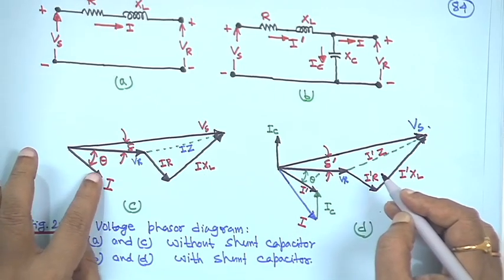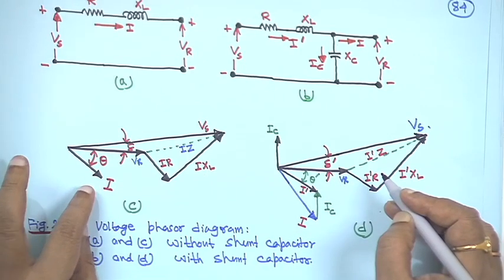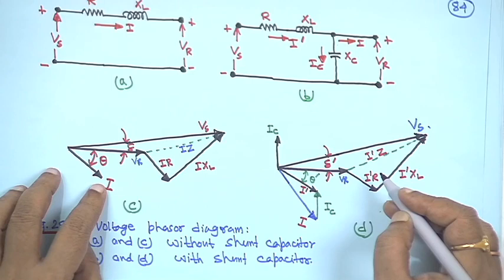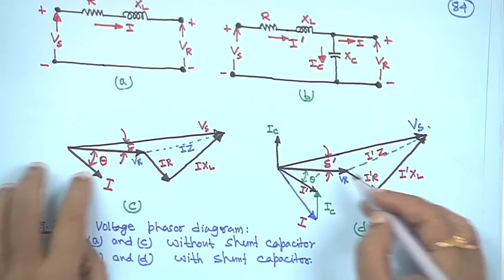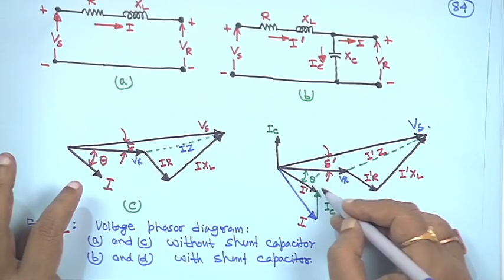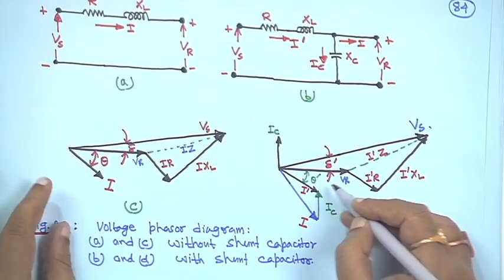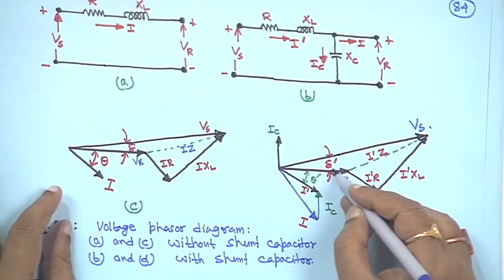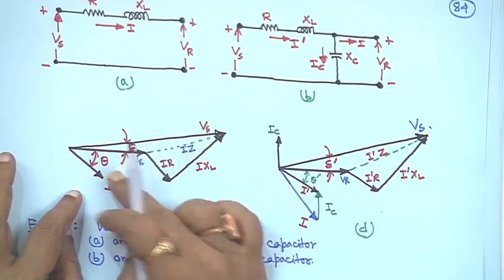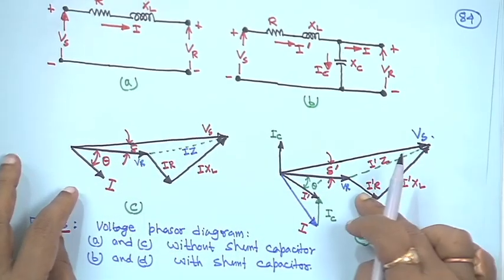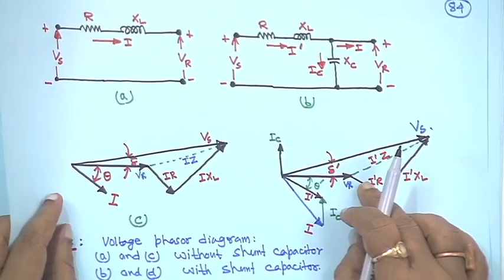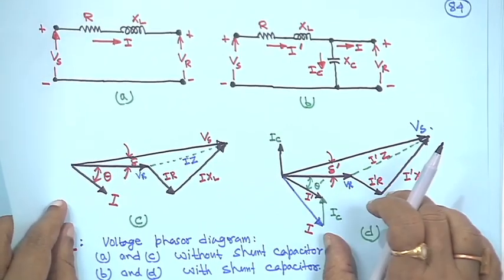Because of this change in angle from delta and theta to delta_dash and theta_dash, connecting the shunt capacitor also improves the power factor of the load.